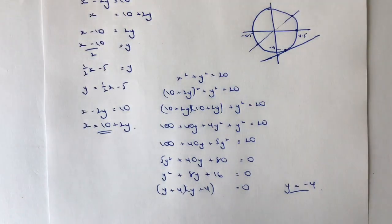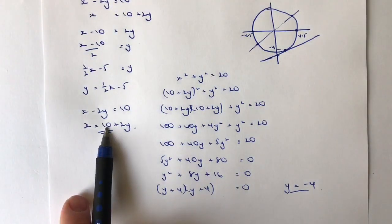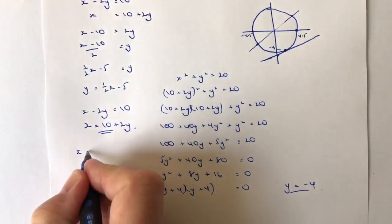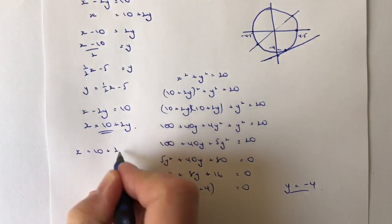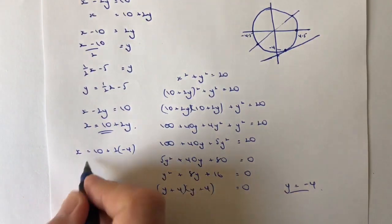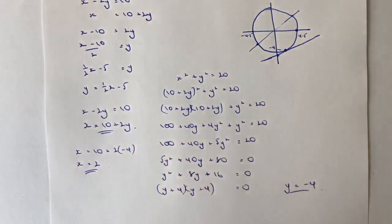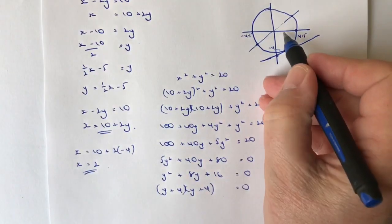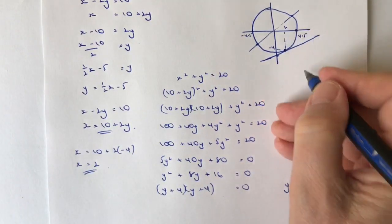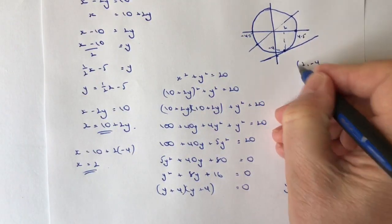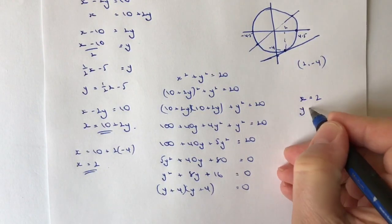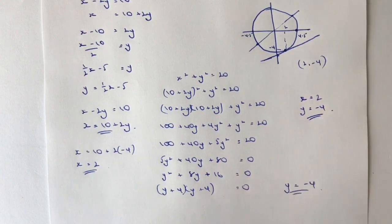Don't forget we said that x equals 10 plus 2y, so therefore I can say that x must equal 10 plus 2 times minus 4, so that means x will equal 2. So I've got y equals minus 4 and x equals 2, so this point here is going to be the point 2, minus 4. In other words, there is one solution where x equals 2 and y equals minus 4, and that's it.